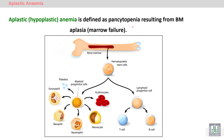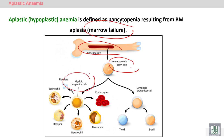Pancytopenia results from marrow failure — the site of production of the blood cells. So if there is a defect in the stem cells, it will lead to a decrease in all blood cells, all myeloid cells. All white blood cells except lymphocytes, because lymphocytes arise from the lymphoid stem cell or lymphoid progenitor. So all blood cells will be affected if the hematopoietic stem cell has a defect.